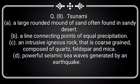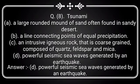Question 8: Tsunami — Option A: A large rounded mound of sand often found in sandy desert, Option B: A line connecting points of equal precipitation, Option C: An intrusive igneous rock that is coarse grained, composed of quartz, feldspar and mica, Option D: Powerful seismic sea waves generated by an earthquake. Answer is Option D: Powerful seismic sea waves generated by an earthquake.